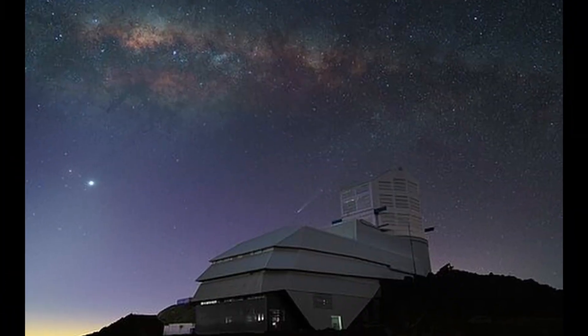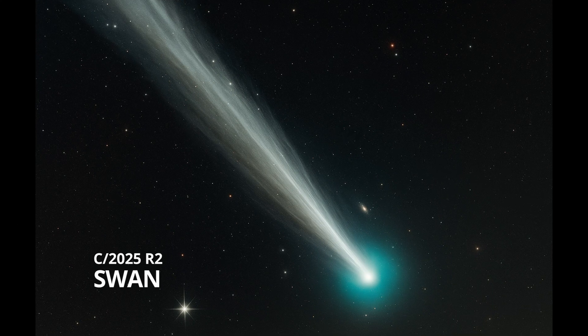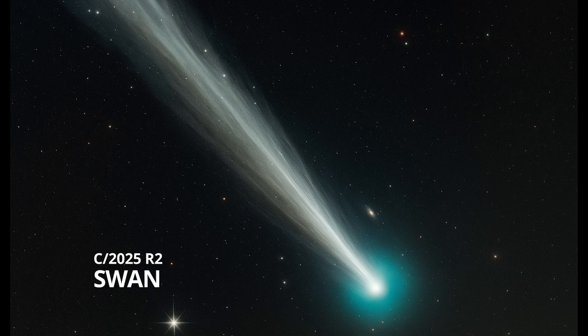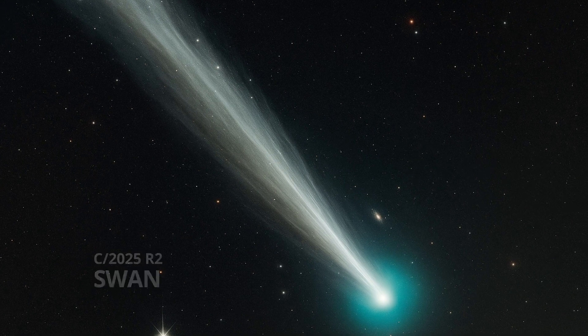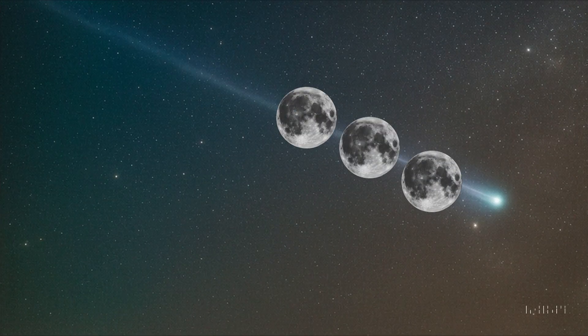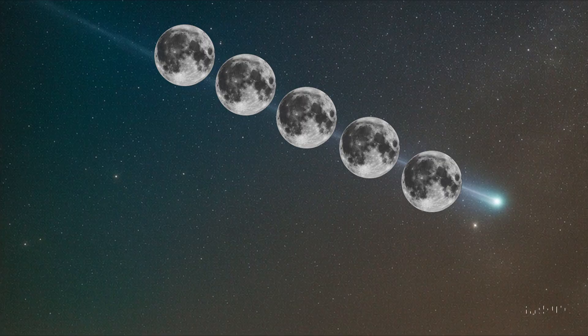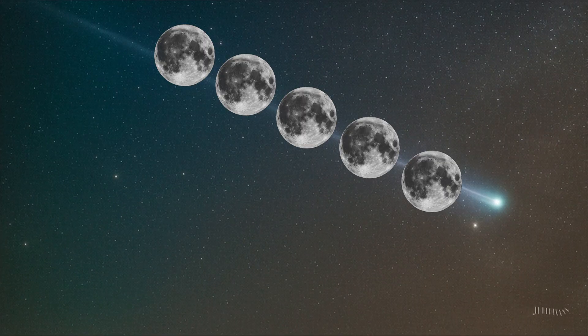Among this fleet are a few key comets. C2025R2 Swan is expected to pass closest to us in late October. It has a super long tail stretching five times the width of the full moon in our night sky, or about 2.5 degrees.